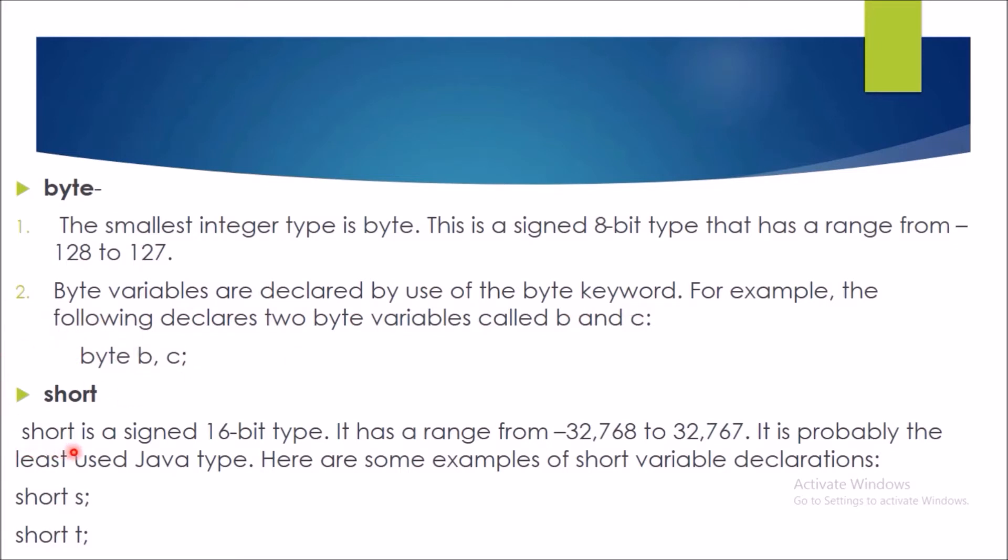Now, if short is considered then short is 16 bit type has a range of minus 32,768 to 32,767. And it is the least used Java data type. So, if you want to declare any data type of short, we can declare this.